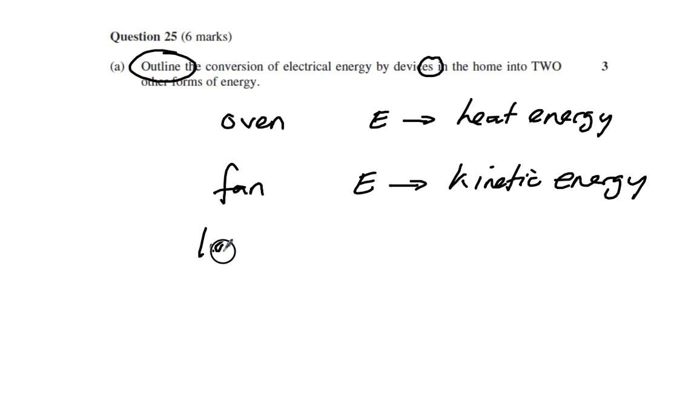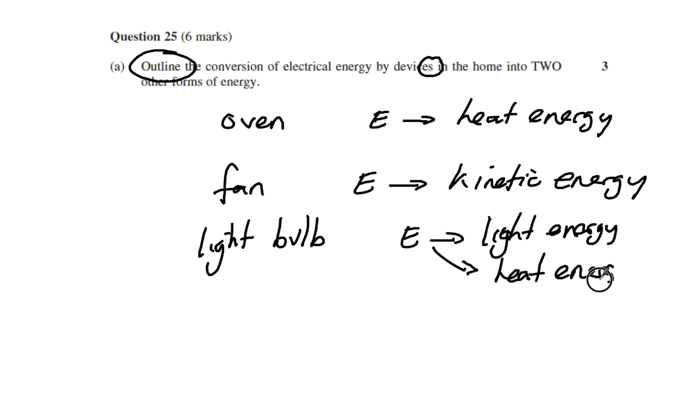You could also have a light bulb, which converts electrical energy into light energy, and if it's not efficient, heat energy as well. Now it's really important: we need two devices and two different forms. It's no point saying oven heat energy and light bulb heat energy because that's one form of energy, nor just saying light bulb with two forms but only one device. That should be fairly easy to get three marks.